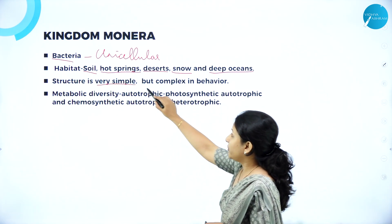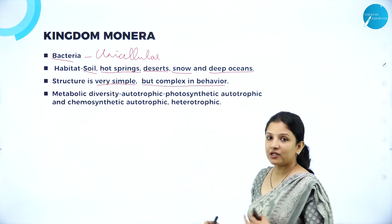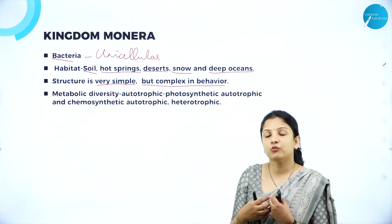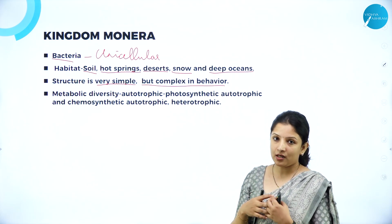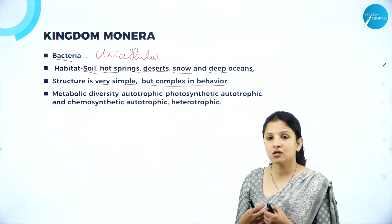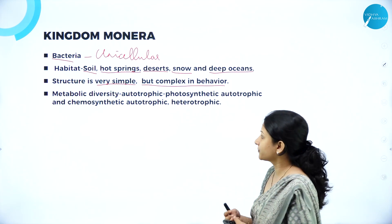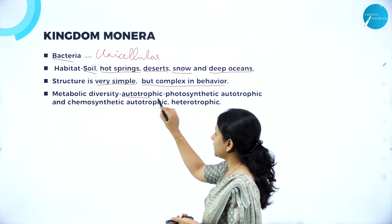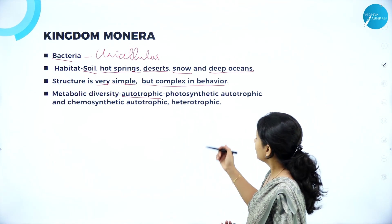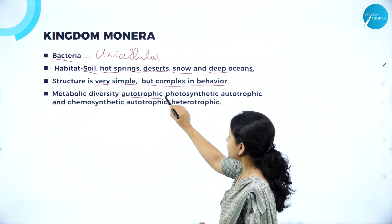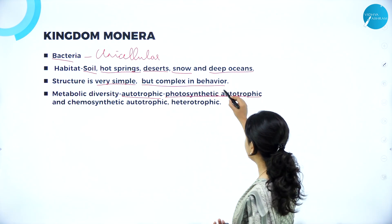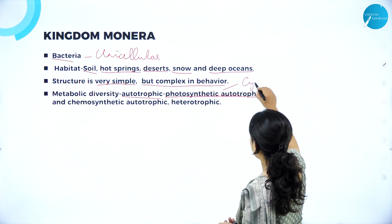they can live in deserts — that is arid conditions — in snow freezing temperatures, and in deep oceans where the light doesn't penetrate. Talking about their structure, it is very simple because they are unicellular — they have one single cell. But their behavior is very complex when it comes to their mode of infection, their mode of nutrition, and their mode of reproduction. Talking about their metabolic diversity or mode of nutrition, they can be autotrophic, wherein they can synthesize their own food. In autotrophic, they can be photosynthetic autotrophs. Example: cyanobacteria.